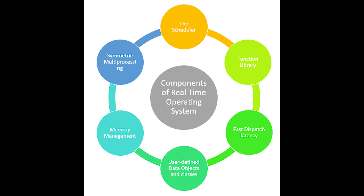Lastly, we have user-defined data objects and classes. Real-time operating systems make use of programming languages like C and C++, which should be organized according to their operation. There are two main aspects of security in an RTOS. The first is security within the RTOS itself — the ability to keep processes separate so one task does not interrupt another. This aspect also affects system stability, as any threat may cause the system to fall into an unknown state.